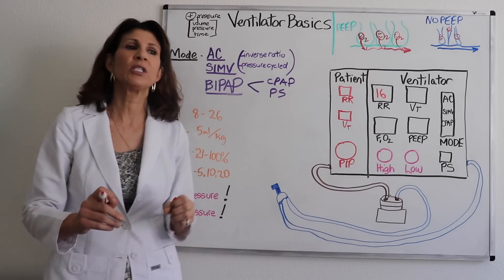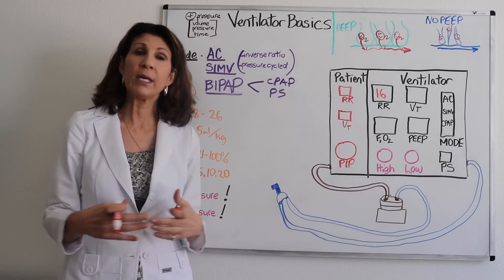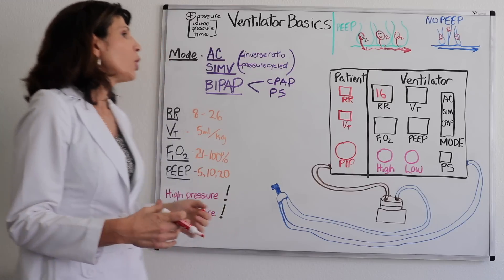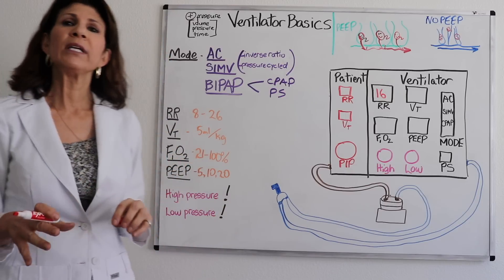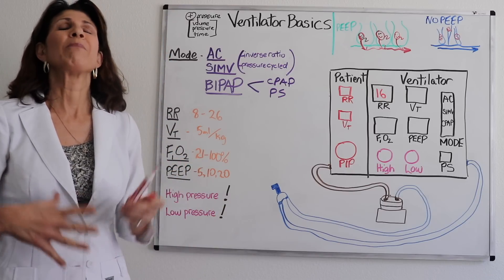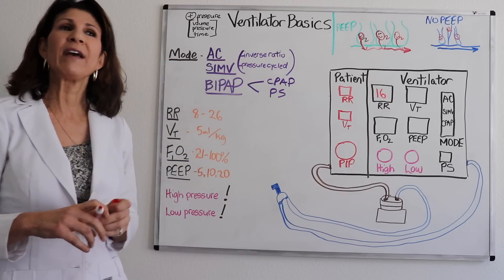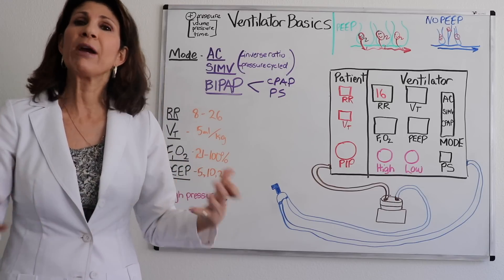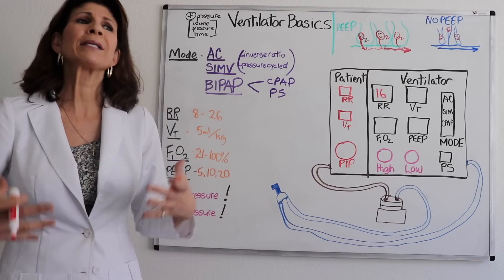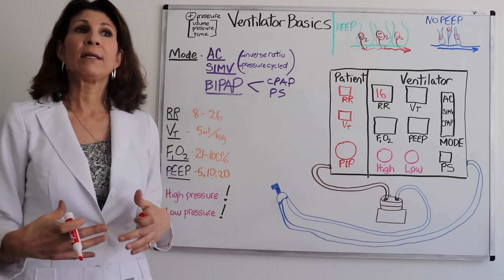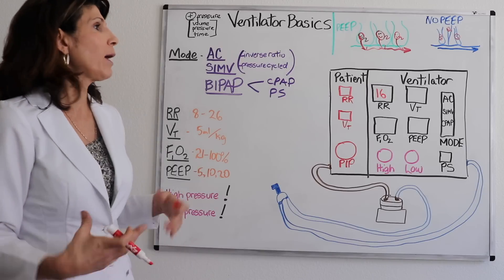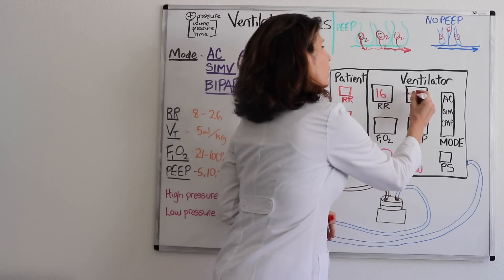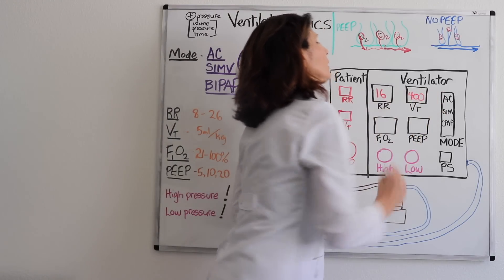Tidal volume. Tidal volume is just that. How much volume is delivered with each breath? So usually it's five milliliters per kilogram. They used to do a lot bigger tidal volumes, but they found that actually traumatizes alveoli, a higher incidence of barotrauma or incidents of pneumothorax and subcutaneous emphysema that is traumatizing for their airway. So let's put in a fictitious tidal volume of 400 milliliters.